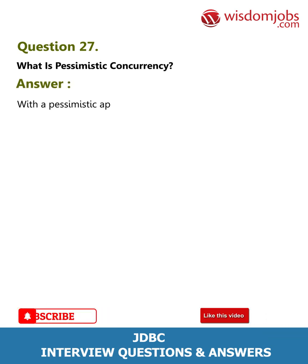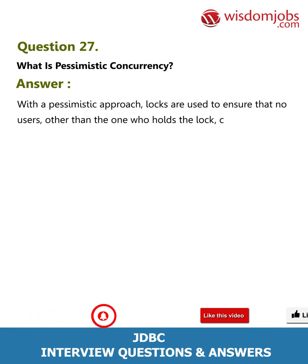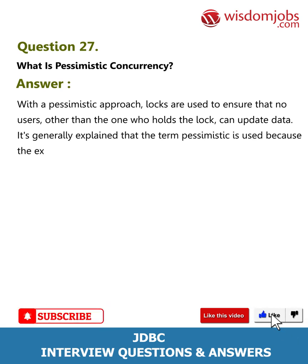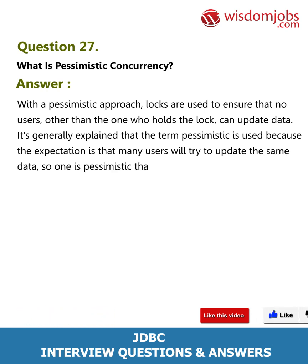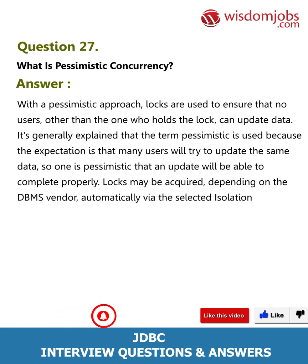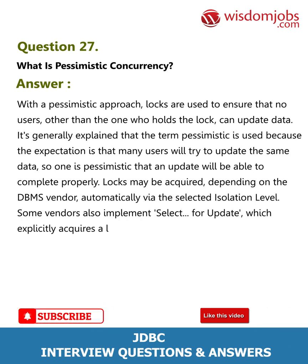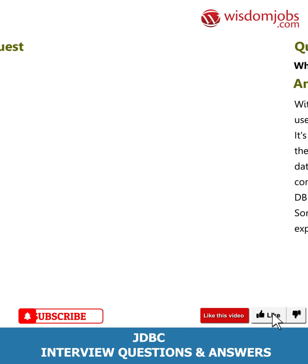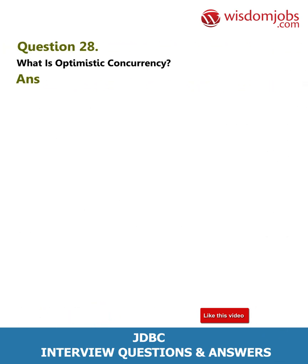Question 27: What is pessimistic concurrency? Answer: With the pessimistic approach, locks are used to ensure that no users other than the one who holds the lock can update data. The term 'pessimistic' is used because the expectation is that many users will try to update the same data, so one is pessimistic that an update will be able to complete properly. Locks may be acquired automatically via the selected isolation level, and some vendors also implement SELECT FOR UPDATE, which explicitly acquires a lock.